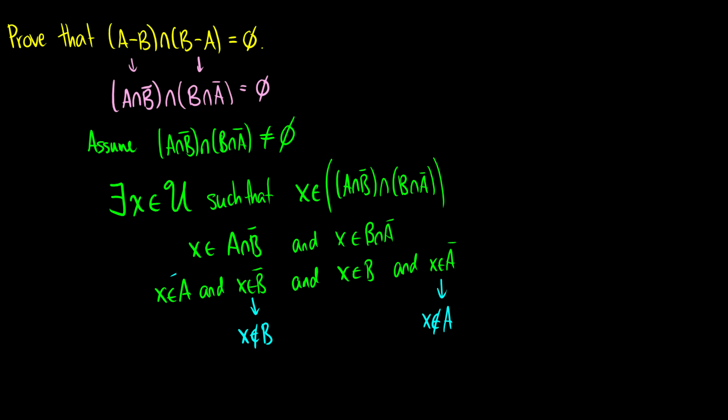But then we have a contradiction, because x is in A but x is also not in A. That's one contradiction. Another is that x is not in B, but we claim x is in B. So if we say this set is not empty, we get a contradiction. Therefore, the set has to be empty. That is a proof by contradiction.